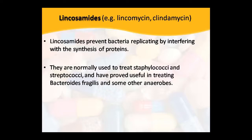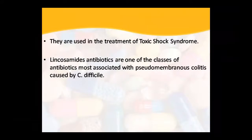Lincosamide — clindamycin drug inhibits bacterial replication by not allowing protein synthesis. It is normally effective against staphylococcus and streptococcus. Staphylococci are found in clusters and streptococci are spherical bacteria found in chains. This is a very powerful drug. It is used to treat Bacteroides fragilis and some other anaerobes. It is also used to treat toxic shock syndrome, which you have also studied in microbiology.